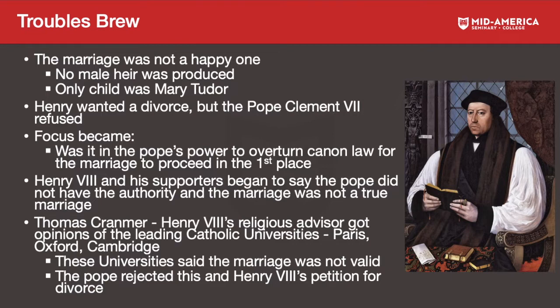Thomas Cranmer, Henry the Eighth's religious advisor, went and got opinions from leading Catholic universities in Paris, Oxford, and Cambridge. These universities said the marriage was not valid and the Pope did not have the authority to authorize it. The Pope rejected what the universities said, rejected Henry's petition, and so Henry the Eighth was now against the Pope.